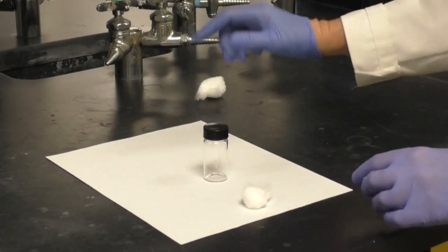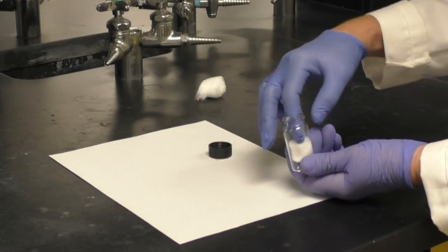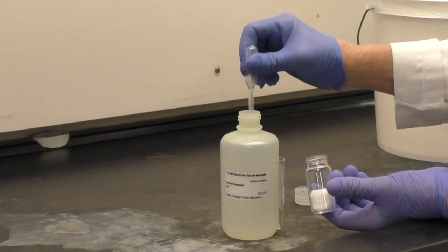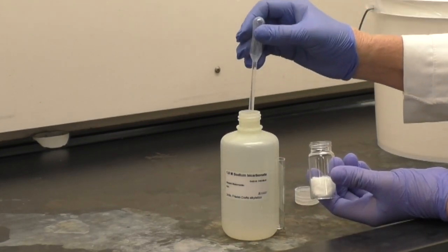Using a 20 milliliter glass vial, tear a cotton ball in half and add it to the vial. Then add 1 molar sodium bicarbonate until the cotton is saturated.